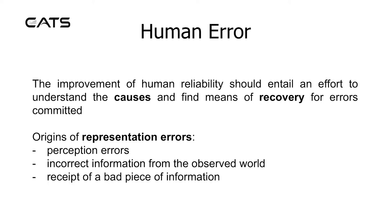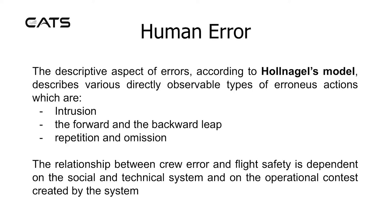Origins of representation errors. Perception errors involve incorrect information from the observed world, such as receipt of a bad piece of information. The descriptive aspect of errors, according to Holnagel's model, describes various directly observable types of erroneous actions.